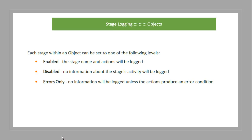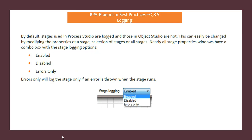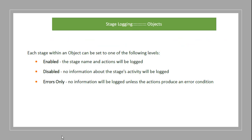This is shown in Object Studio. The 'errors only' option will log the stage only if an error is thrown when the stage runs. The 'errors only' option logs stages only on errors. Usually in stage logging we will use 'enabled.' There are three components of stage logging. Each stage within an object can be set to one of the following levels: enabled, disabled, or errors only.